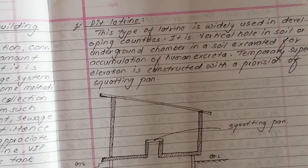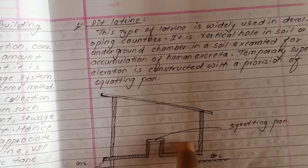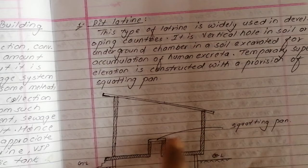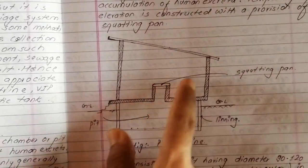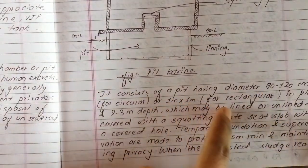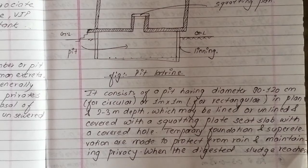This type of latrine is usually used in developing countries. It is a vertical-walled underground chamber excavated for accumulation of human excreta. A temporary superstructure is constructed with provision of a pan. It consists of a pit latrine having a diameter of 90 to 120 cm for circular and 1m x 1m for rectangular in plan, and 2 to 3 meters depth, which may be lined or unlined and covered with a squatting slab. The squatting slab includes a seat slab with a covered wall.